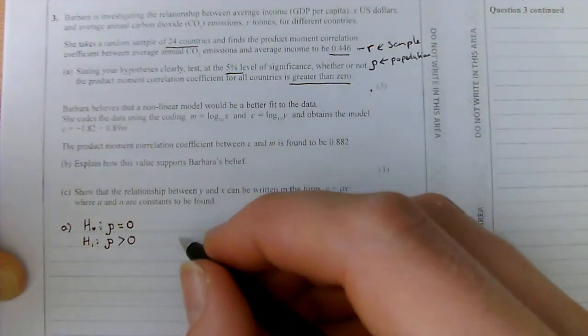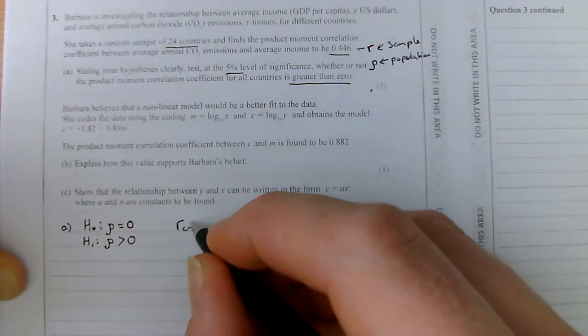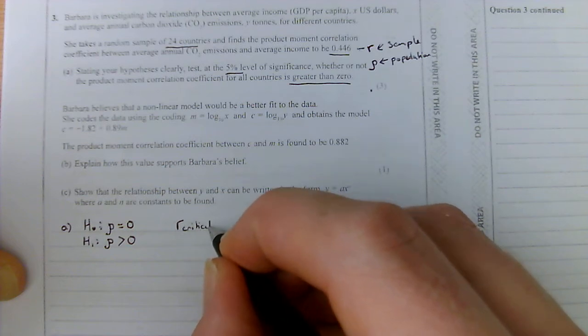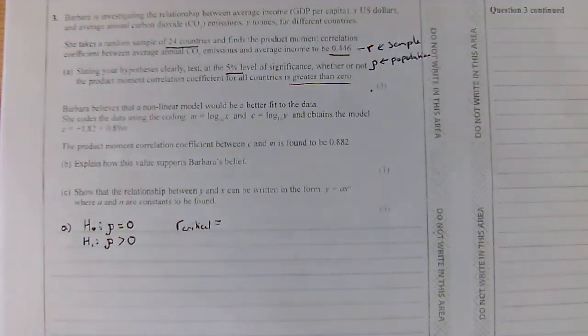We then need to find the critical value for R. You can't do that on your calculator. The only way you can do that is looking at the tables, which are given to you on page 37 of your formula booklet, the critical values for the correlation coefficient.